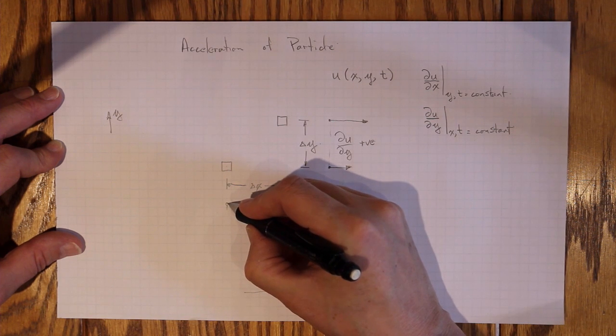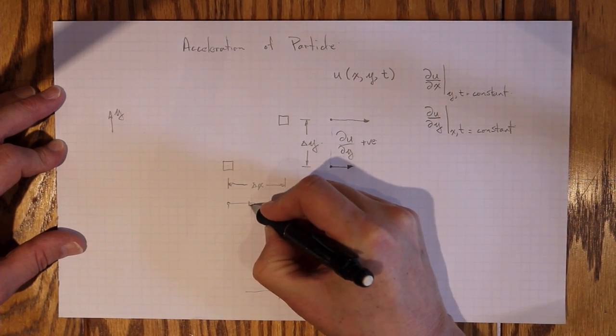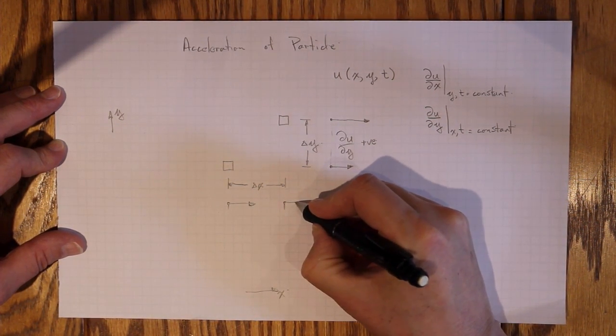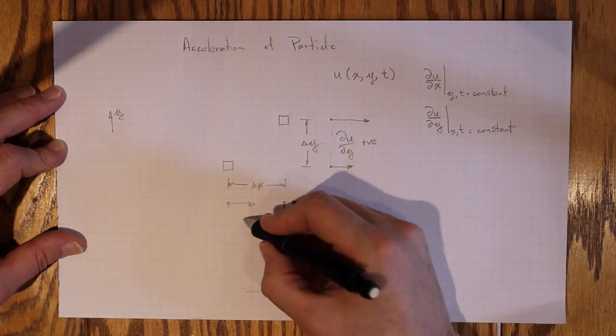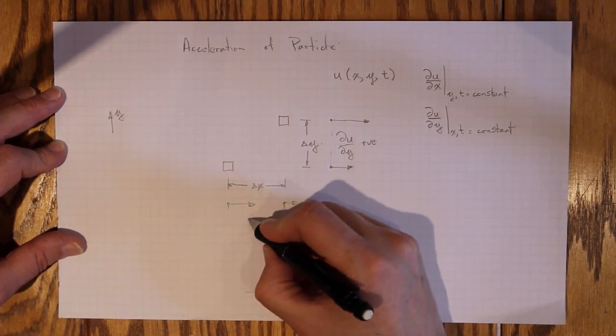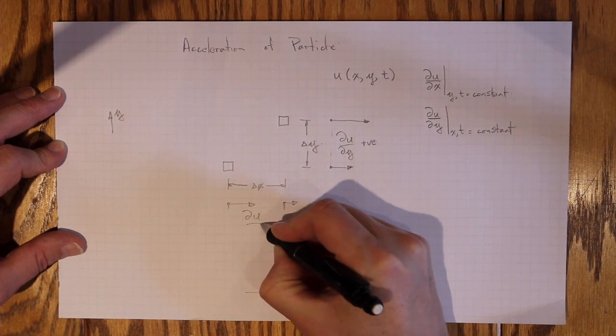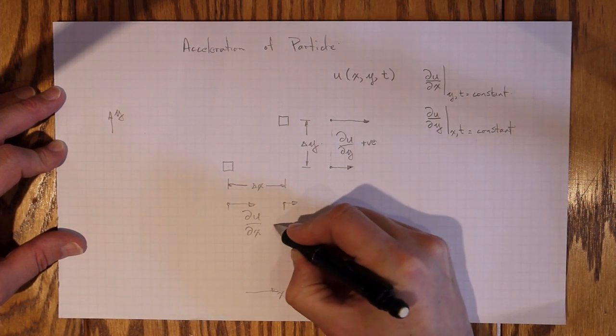If u was equal to that value there, and somewhat smaller over here, then at a given time, that leads us to ∂u/∂x negative.